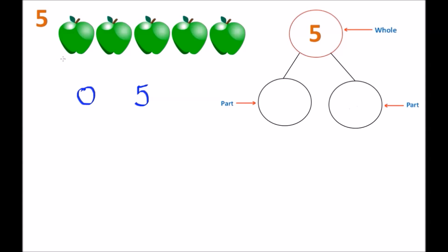Let's go back to the apples and start one by one. We have one apple, so let me put down the number one. How many other apples are remaining? We have one, two, three, and four — so four is our next number. We have one and four, which together gives us the number five. The one goes on the left side and the four goes on the right side — those two parts give us the whole of five.